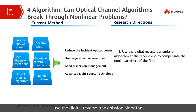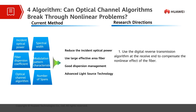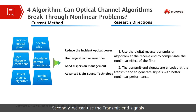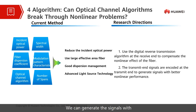The first approach is to use a digital reverse transmission algorithm at the receiving end to compensate the non-linear effect of the fiber. The second approach is to encode the transmit-end signals at the transmit end, generating signals with better non-linear fiber performance.